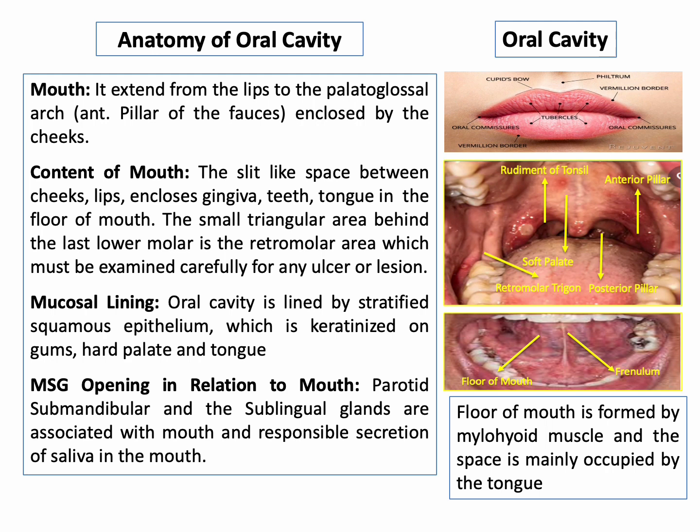The oral cavity is lined by stratified squamous cell epithelium, which is keratinized on the gums, hard palate, and tongue. The parotid, submandibular, and sublingual glands are the associated major salivary glands with the mouth and are responsible for secretion of saliva.